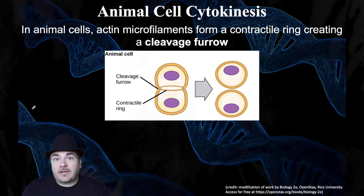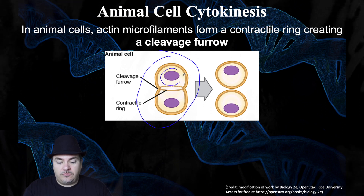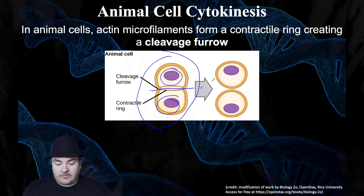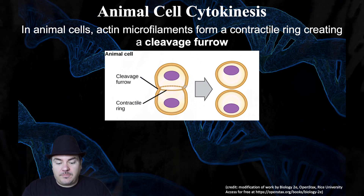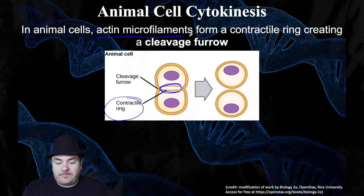Let's start with animal cell cytokinesis. During telophase of mitosis, you have one animal cell that has two nuclei inside it. This animal cell is going to need to split down the middle to become two separate animal cells. How that happens is in the middle of the cell, a contractile ring forms. That contractile ring is built out of actin microfilaments.